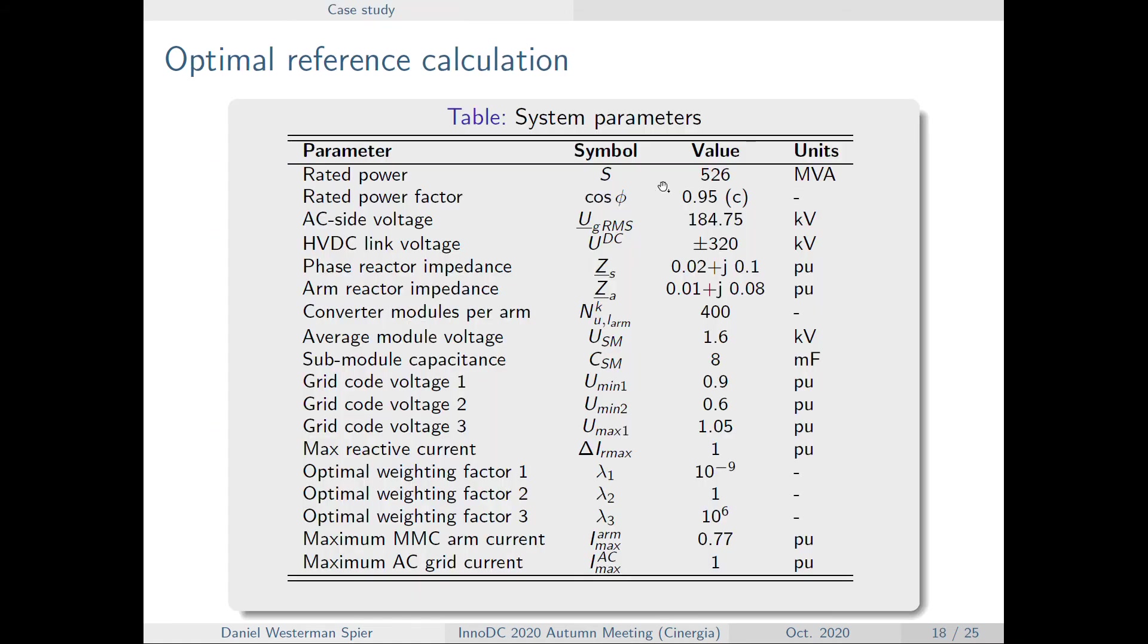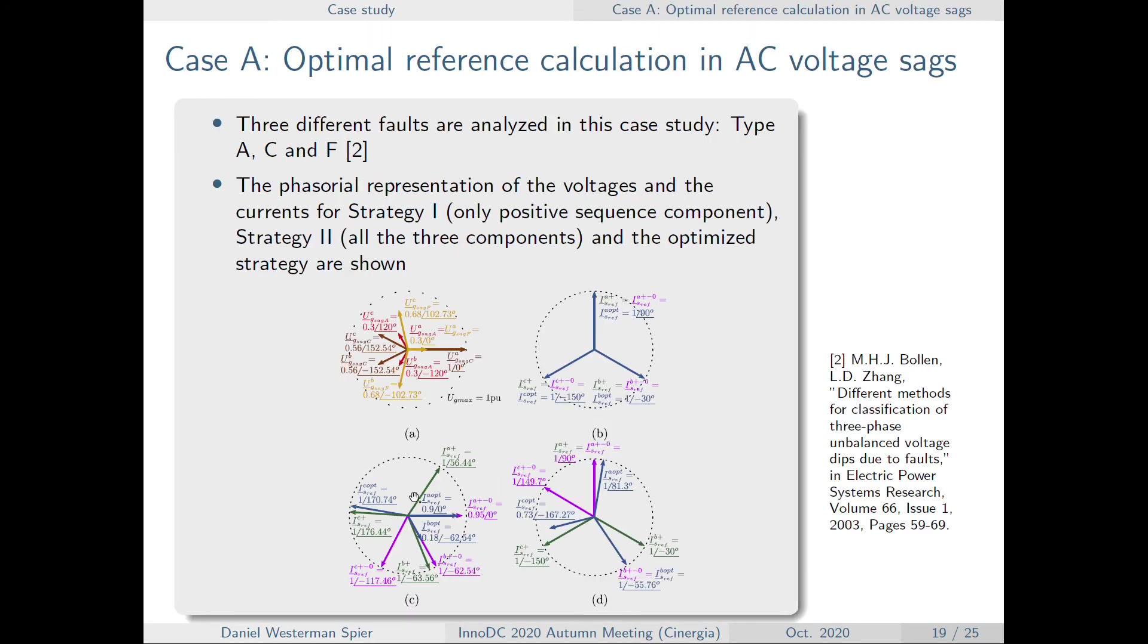For the case studies, we have this table here showing the system parameters. And here we have three different faults. We have the phasor behavior for three different faults, for a three-phase fault, a single line-to-ground fault, a line-to-ground fault.